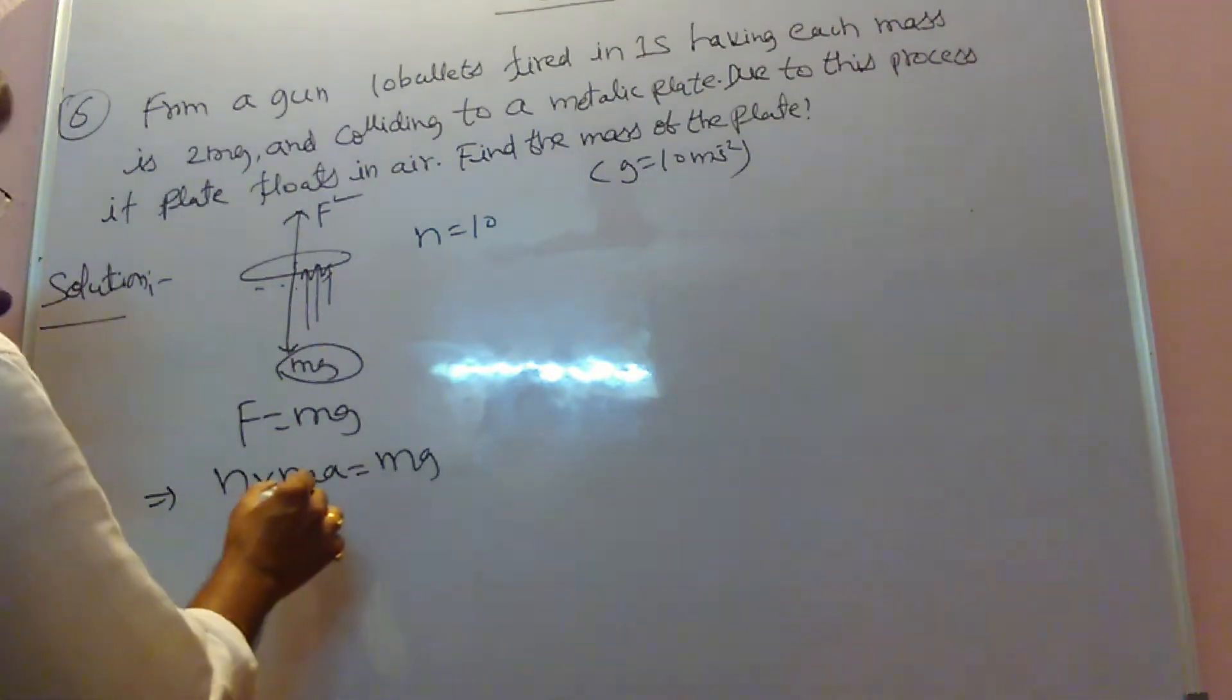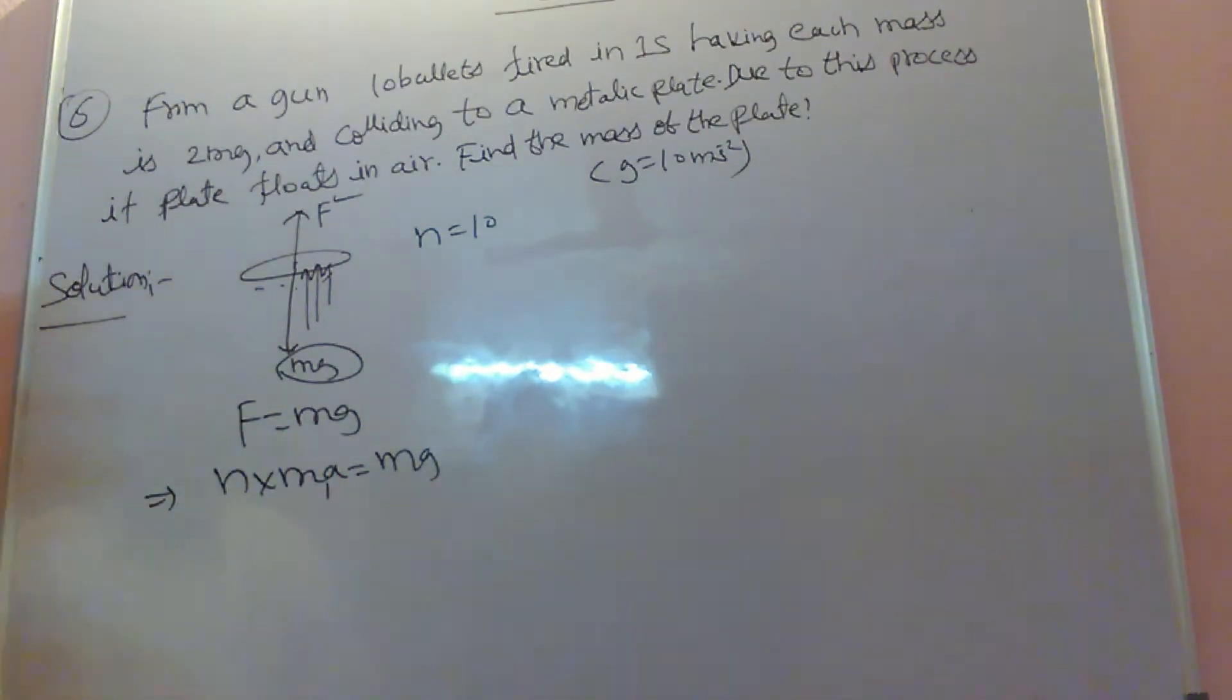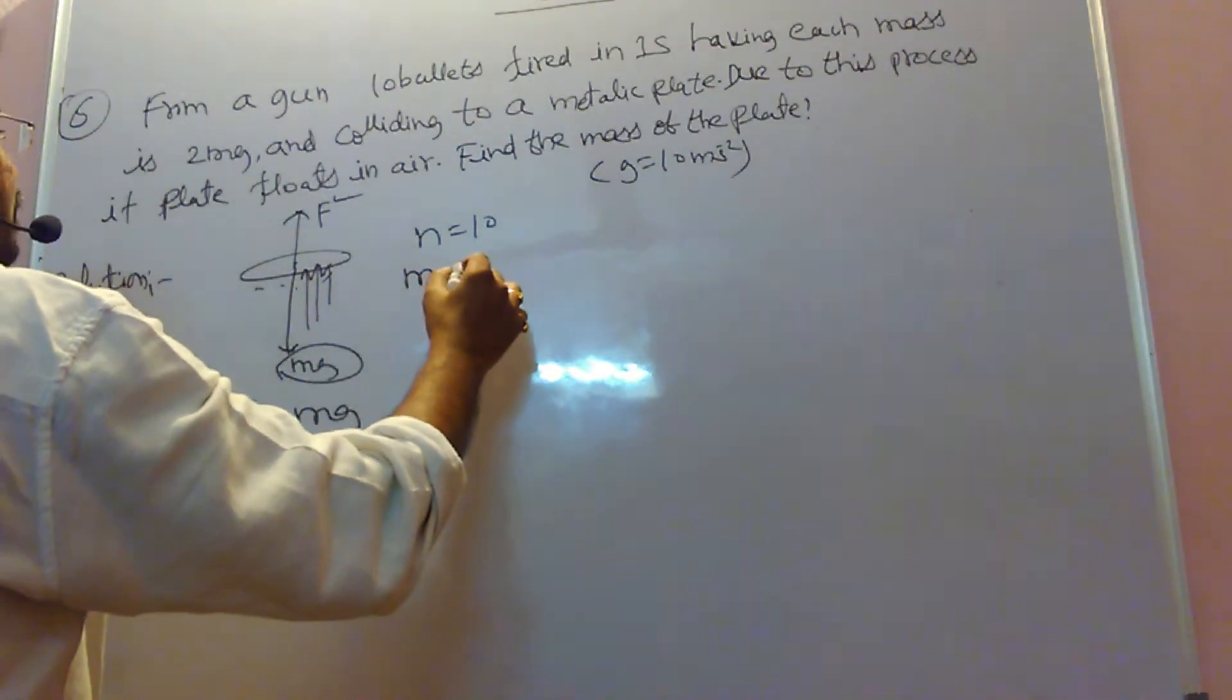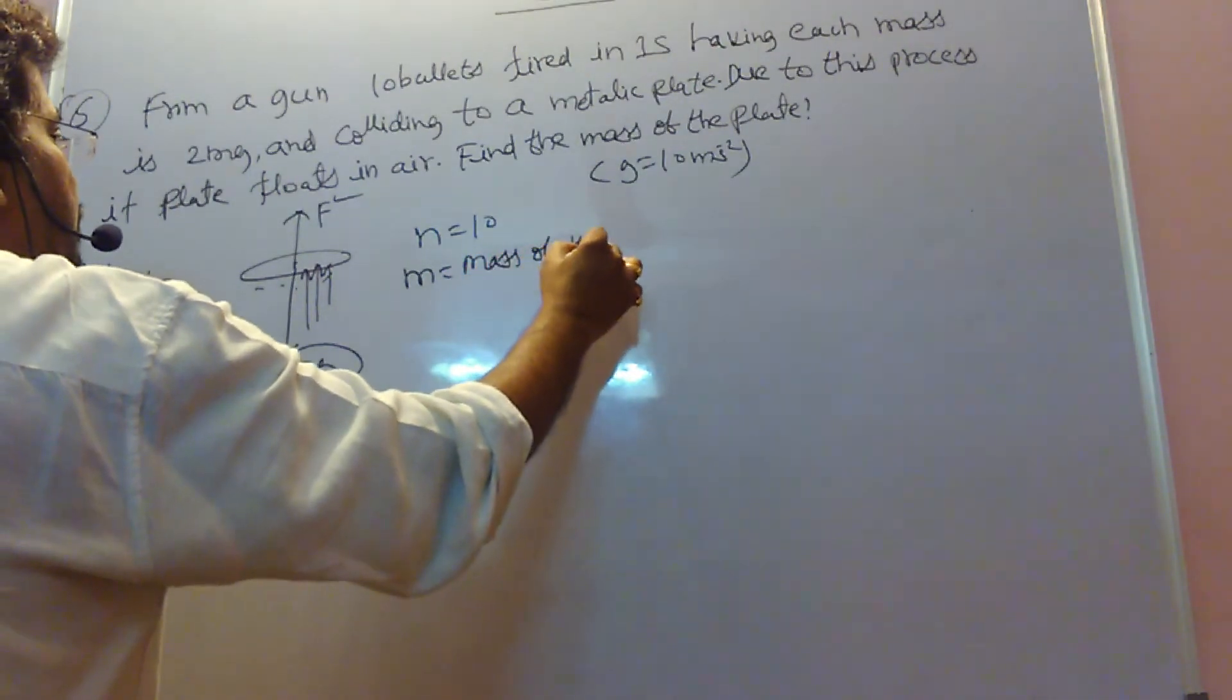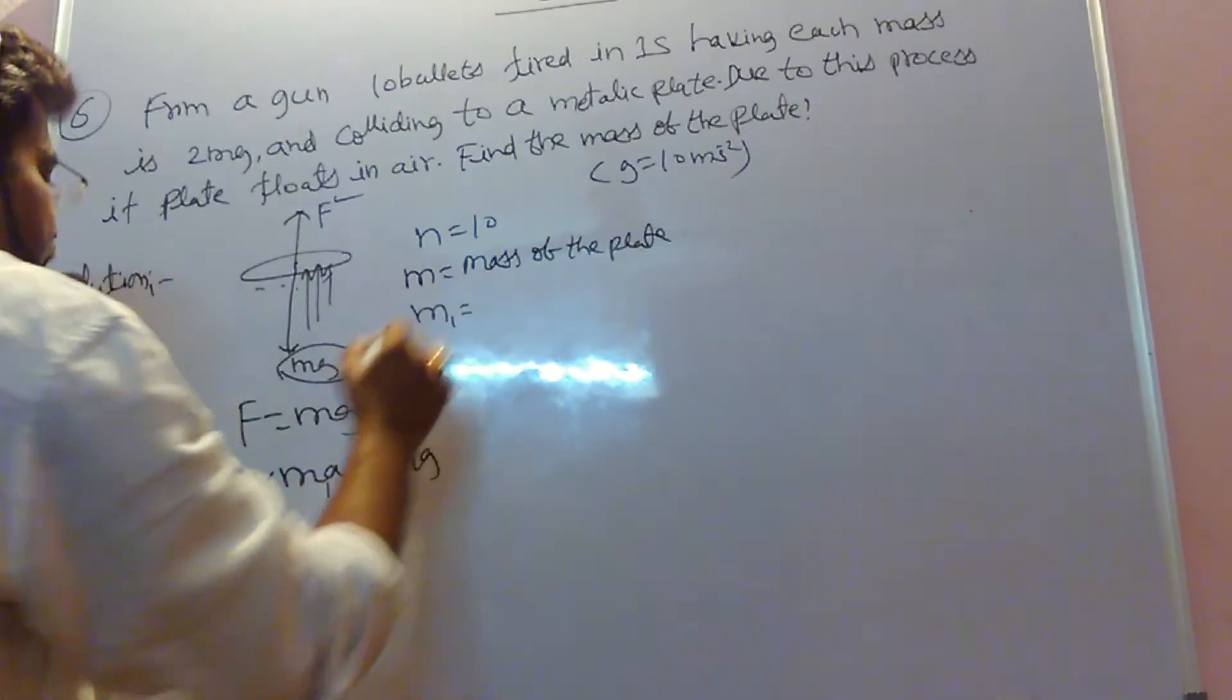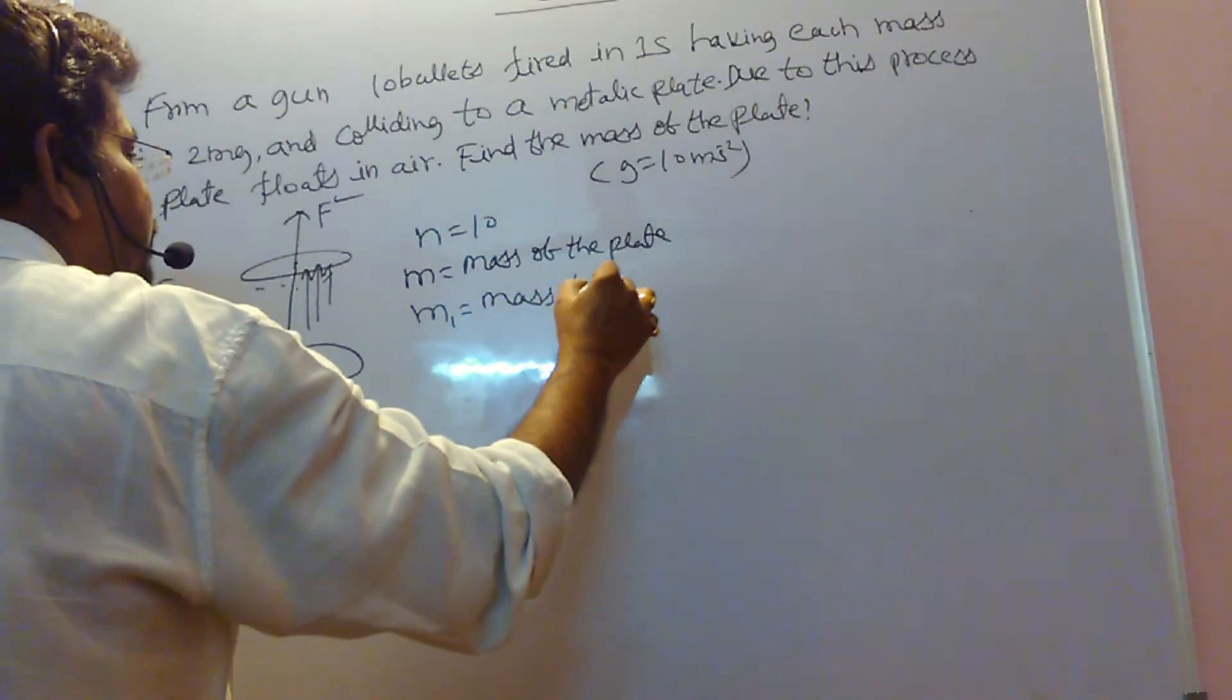Here, what is the m? Mass of the bullet, you take m1. Mass of the plate, you take small m. What is small m? Mass of the plate. What is small m1? Mass of the bullet.